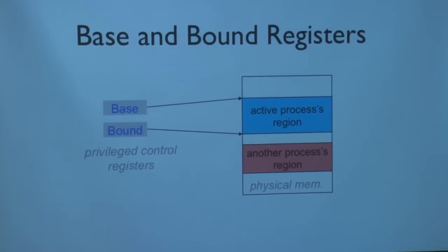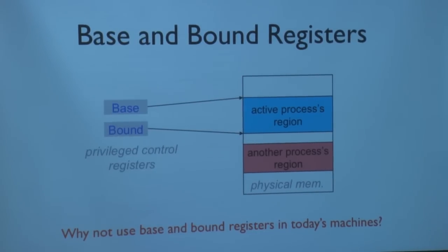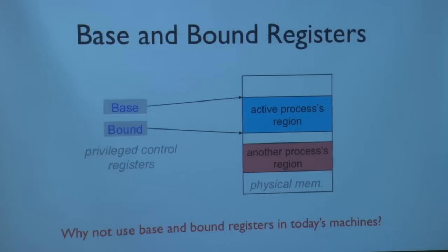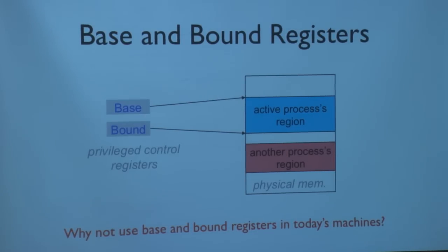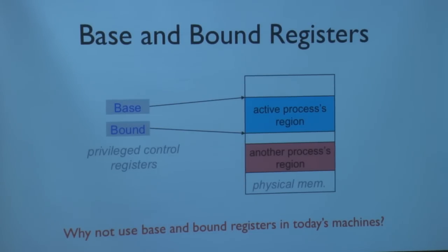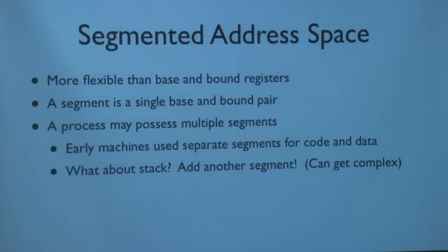Why not use base and bound in today's machines? We want a lot of memory and this can't give us that. Also, it can lead to fragmentation in physical memory — if we have many processes arriving and leaving, we might have all the space but fragmented, unable to give a process one large contiguous region. We could give it non-contiguous regions, which is something virtual memory solves. An early attempt at solving the same problem was a segmented address space — a list of base and bound registers for each process, more flexible than a single pair.